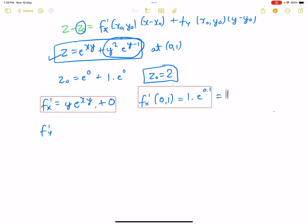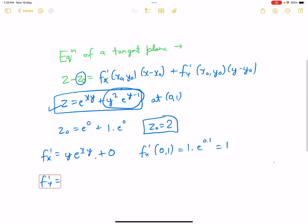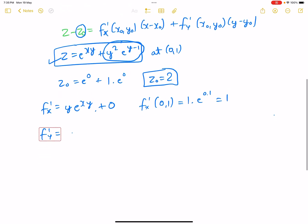Similarly f'ᵧ - so if we see about f'ᵧ, this would be e to the power xy times x, derivative of this, and then the derivative of this with respect to y. Now we will use the chain rule: derivative of y square is 2y times e to the power y minus 1 plus derivative of e to the power y minus 1.